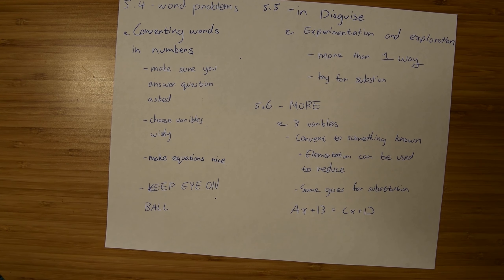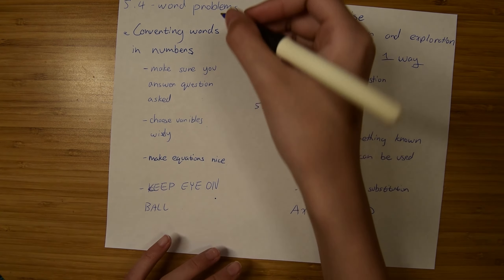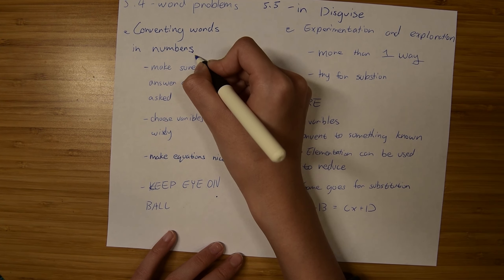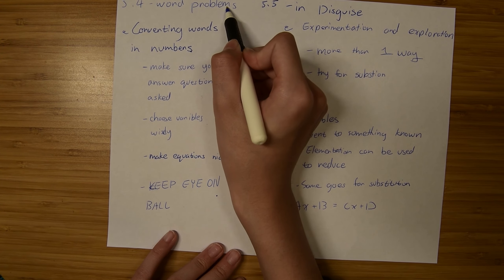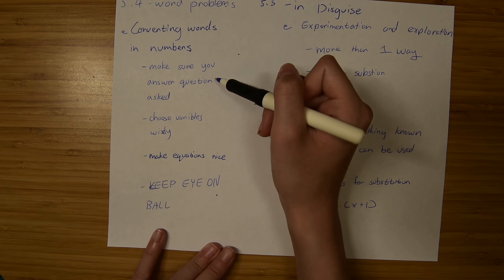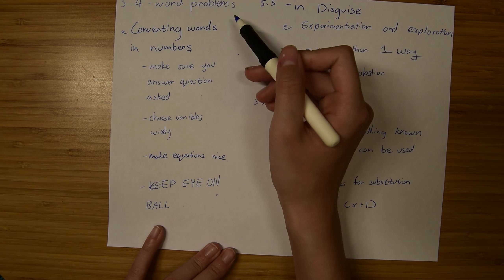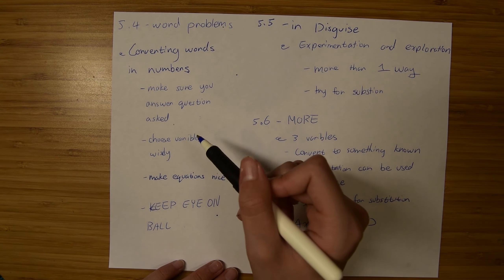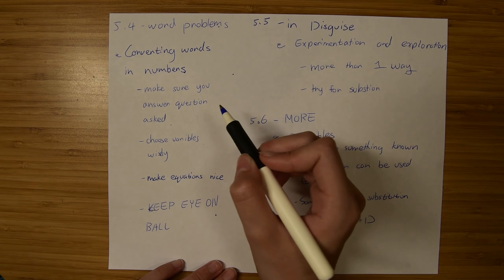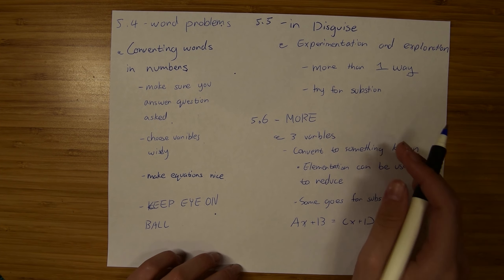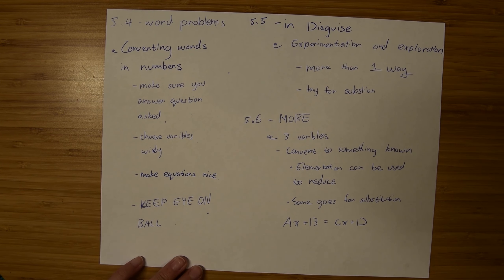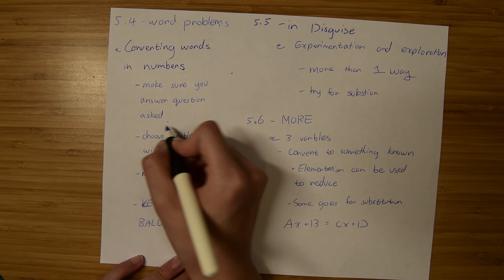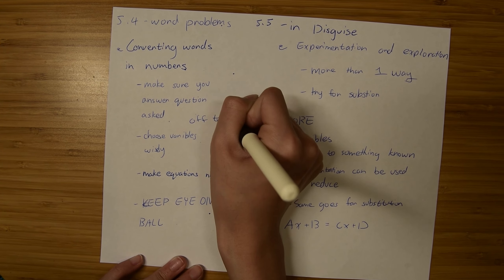Now moving on to lesson 5.4: Word Problems. The essential concept is converting words into numbers. One key rule is to make sure you answer the question asked — for example, if they ask for Team B's score but you solved for Team A's, that is going off topic. Always keep your eye on the ball.